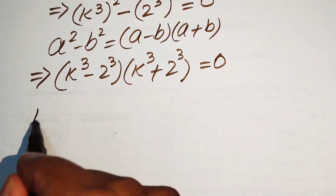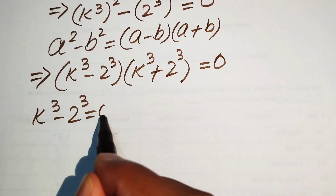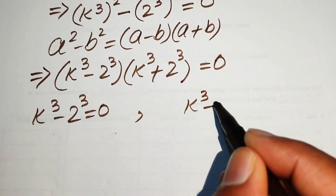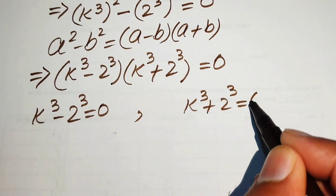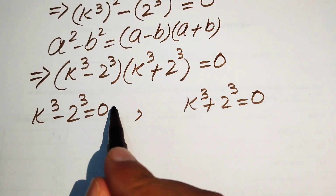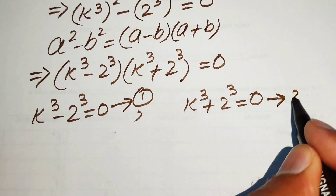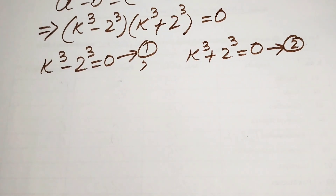The first case is k cubed minus 2 cubed equals 0, and the second case is k cubed plus 2 cubed equals 0. We call this equation number 1 and equation number 2. Now we solve these two equations simultaneously to get all six values of k.